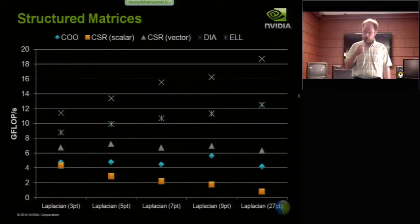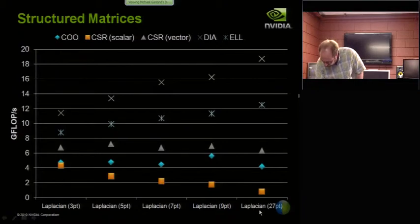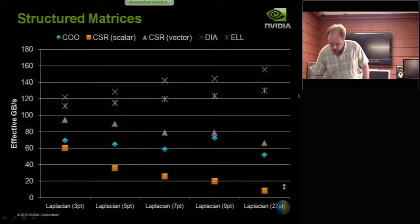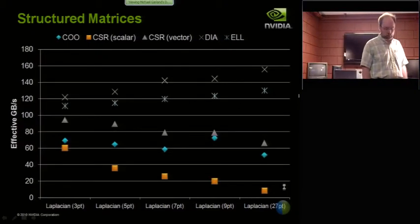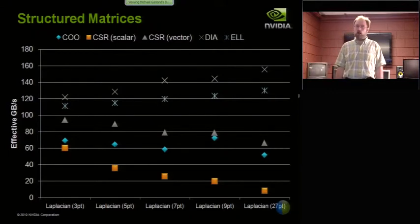So first, structured matrices. Remember, structured matrices, by that I mean has some number of diagonals. I'm going to jump in and ask a quick question here. You say you're using the texture cache on a Fermi generation chip. Have you played with the L1 cache yet? Yes. Yes, I have. Does it perform well or not so well?